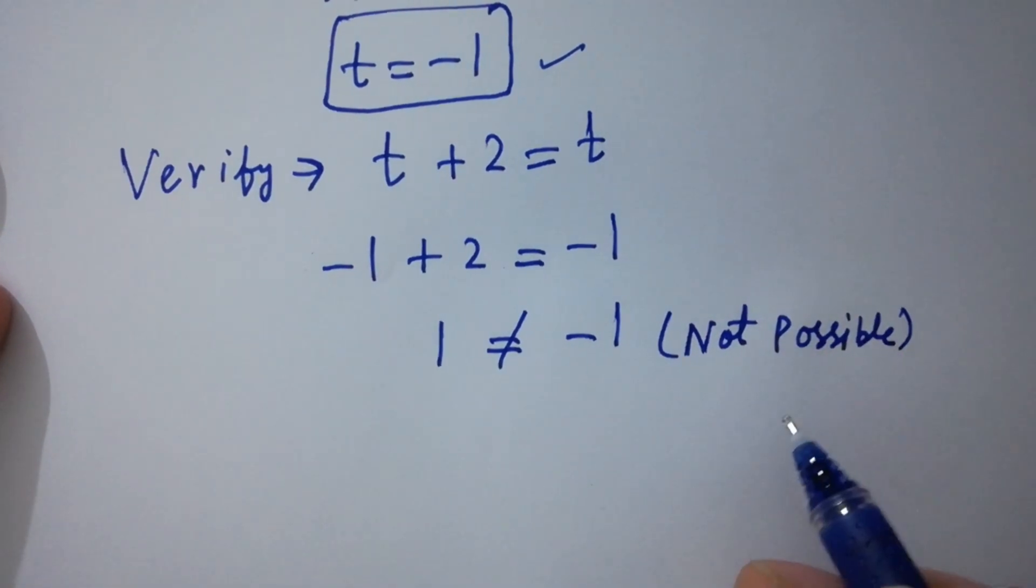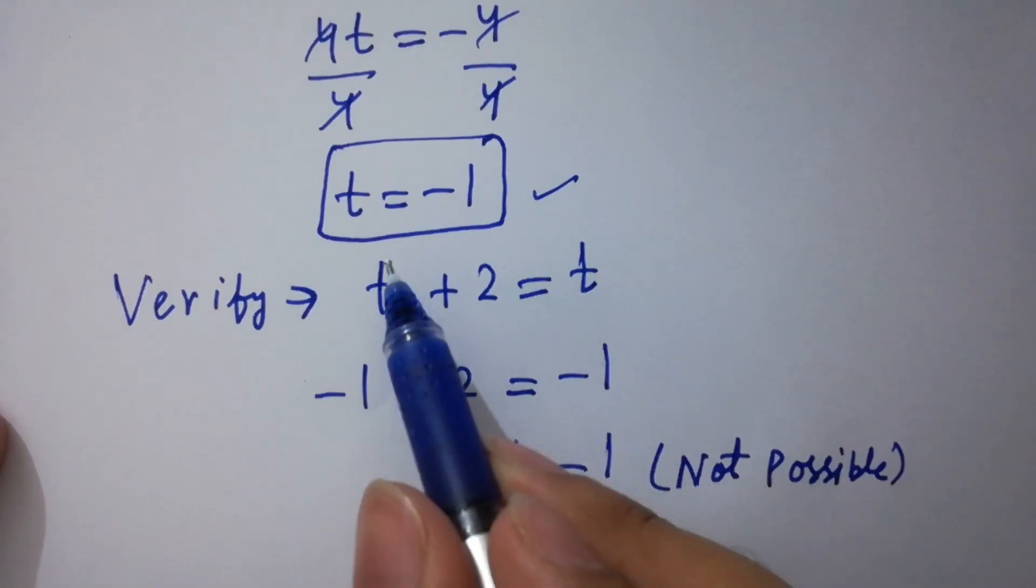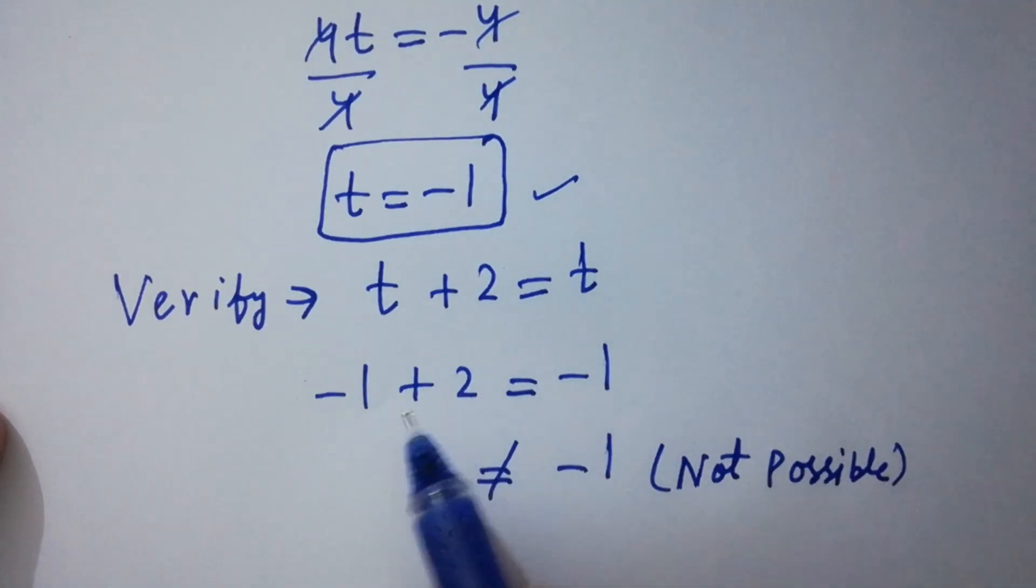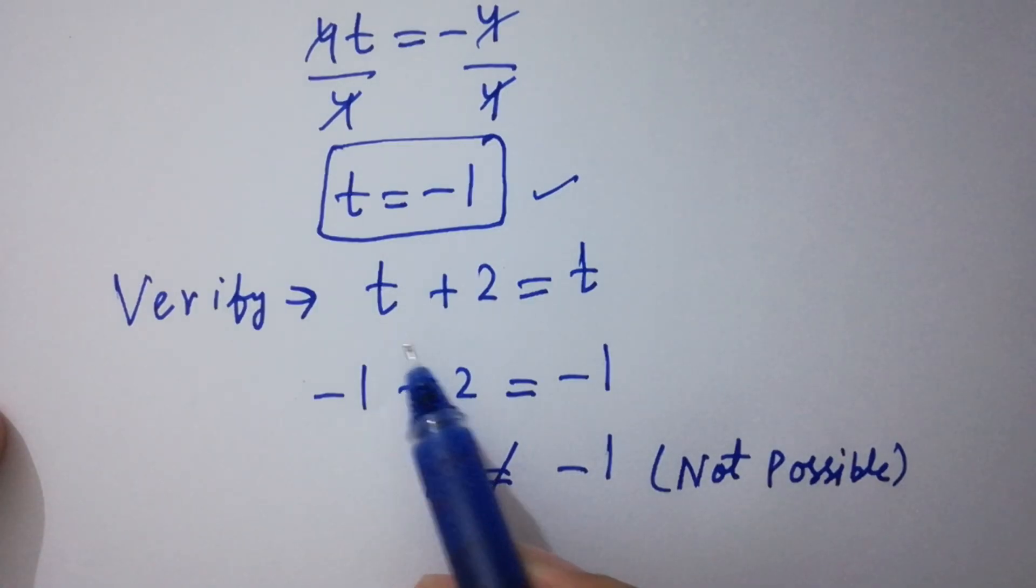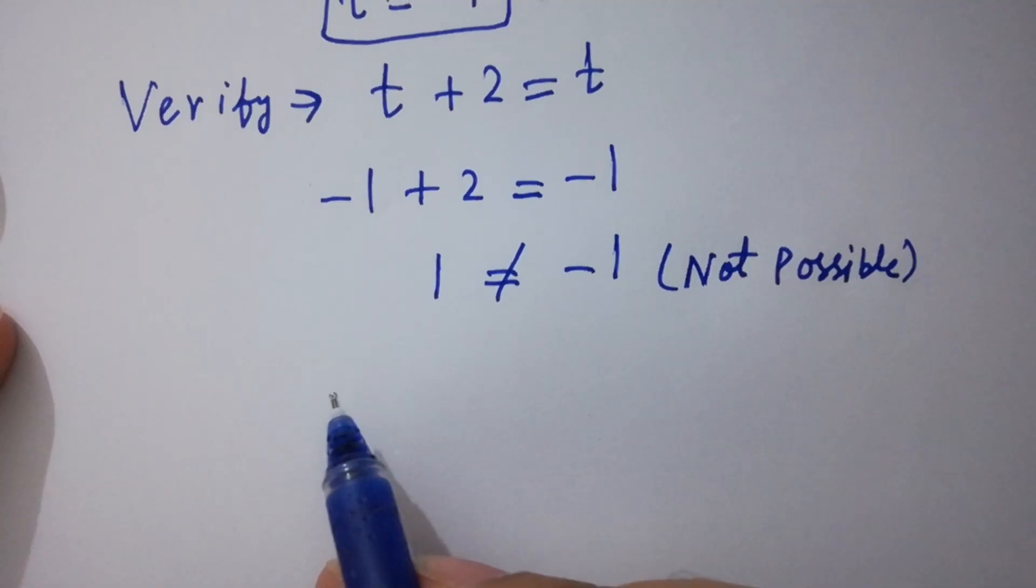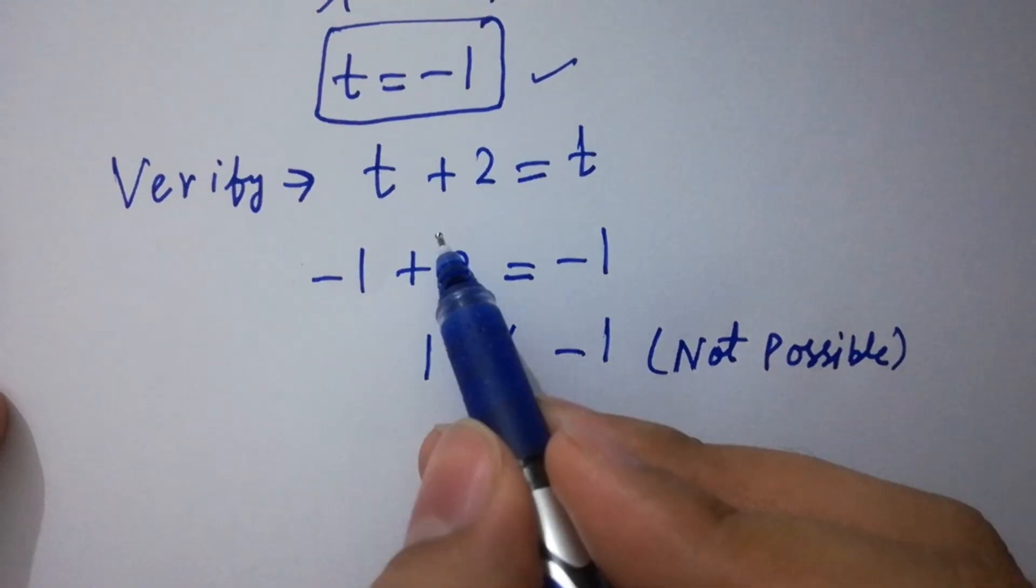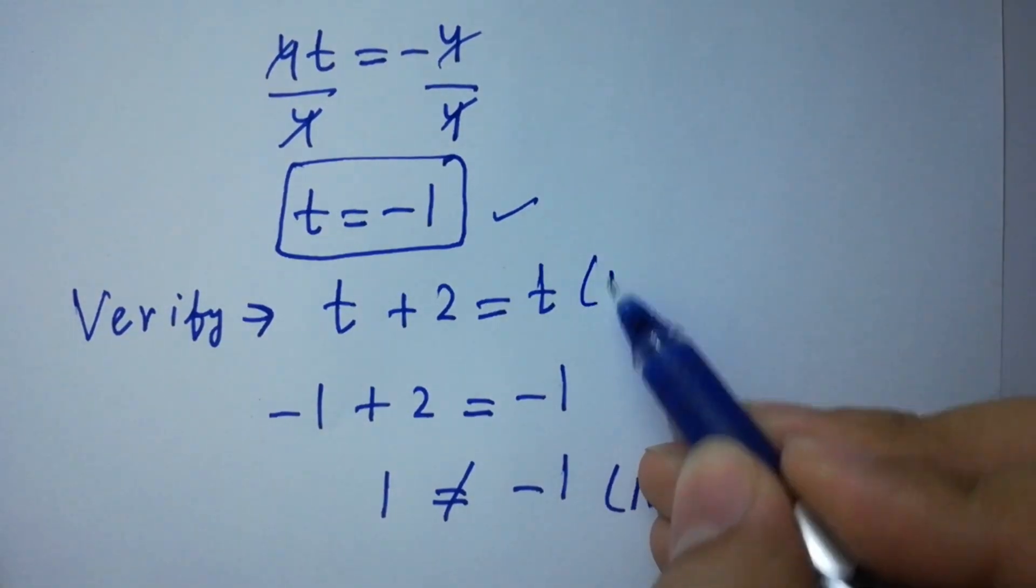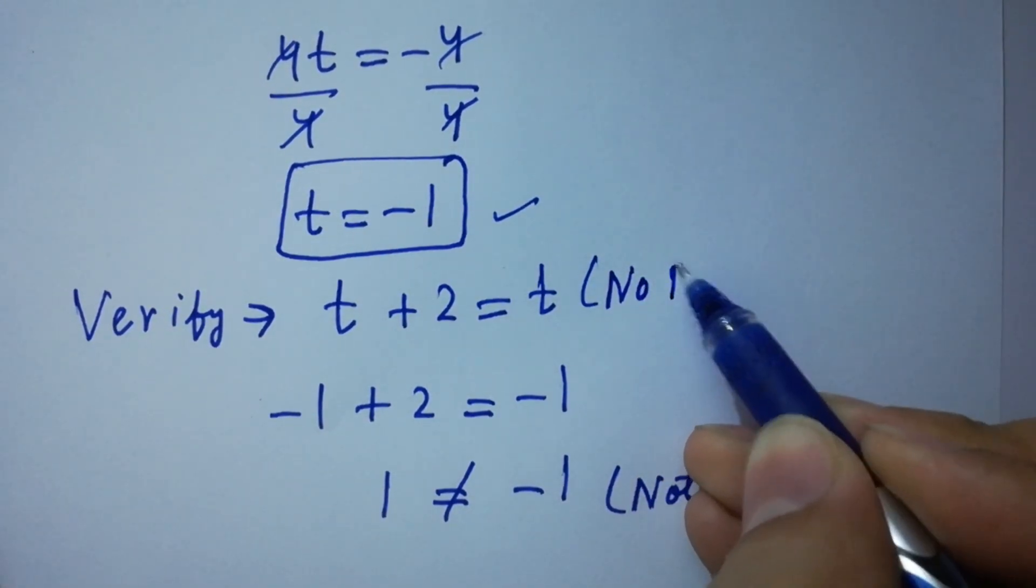This shows that the value of t equals minus 1 does not satisfy the equation t plus 2 equals t. So finally, the problem of t plus 2 equals t has no real solution.